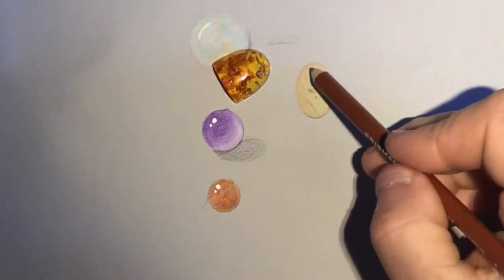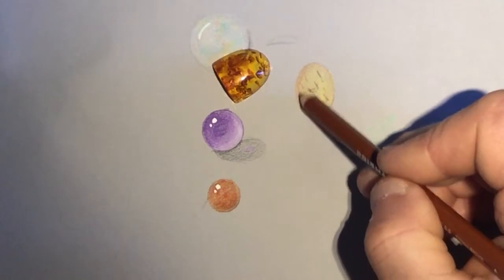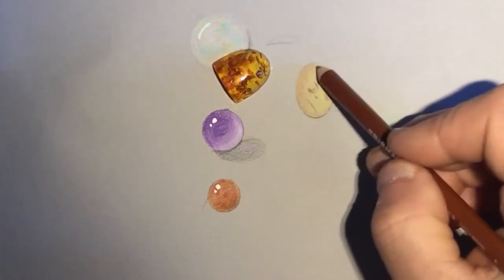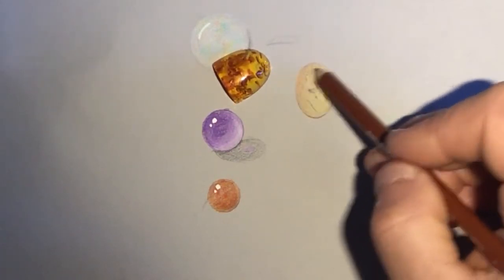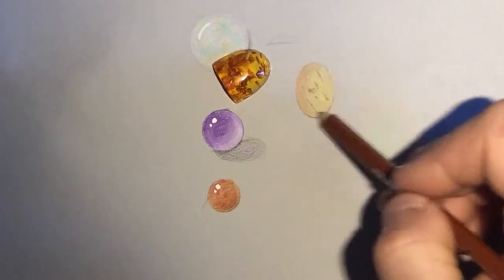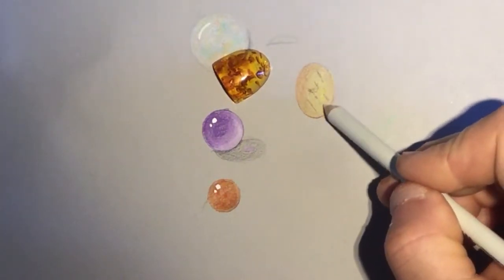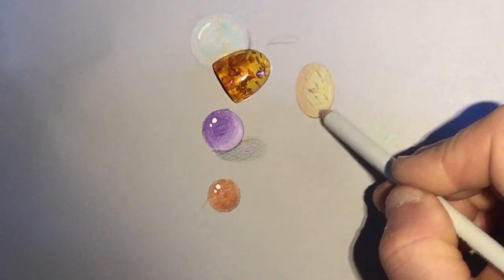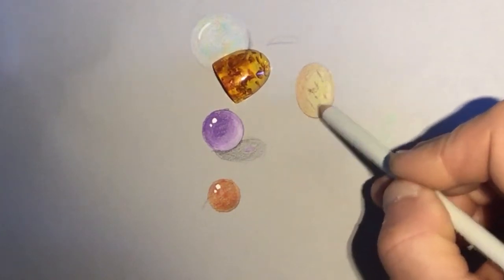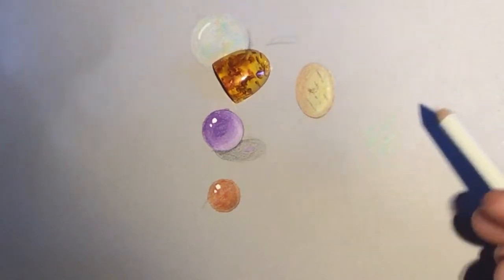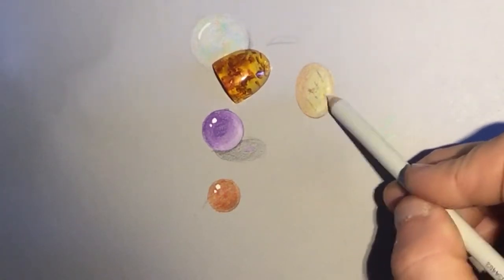I'm gonna go back to my dark brown and I'm gonna reassert some shape up here. I'm gonna warm it all up, actually. Where'd my white go? This is going to be my white zone here where the light is going through, so I'm going to start lightening this up now.